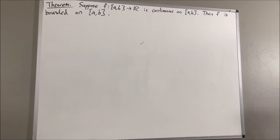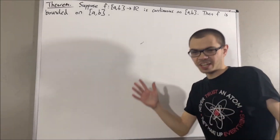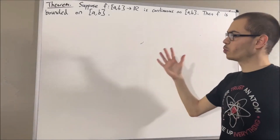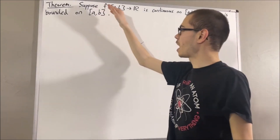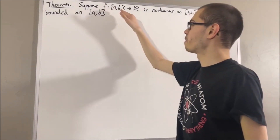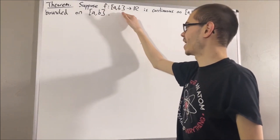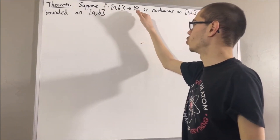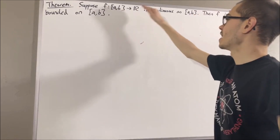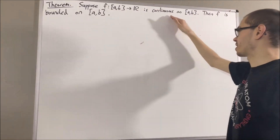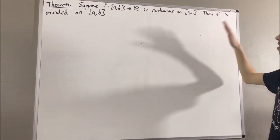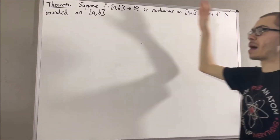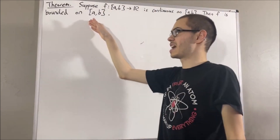Hello! In this video, we are going to prove the following theorem. Suppose f is a function from the closed interval a, b to R, and f is continuous on a, b. Then f is bounded on a, b.